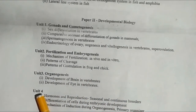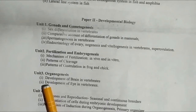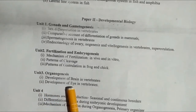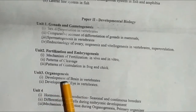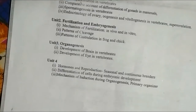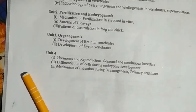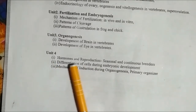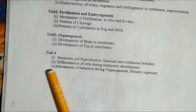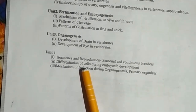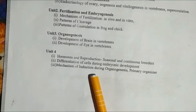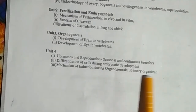Unit Third is organogenesis, with two topics: development of brain in vertebrates and development of eyes in vertebrates. Unit Fourth covers three topics: hormones and reproduction, seasonal and continuous breeders, differentiation of sex organs during embryonic development, and the mechanism of induction during organogenesis and the primary organizer.